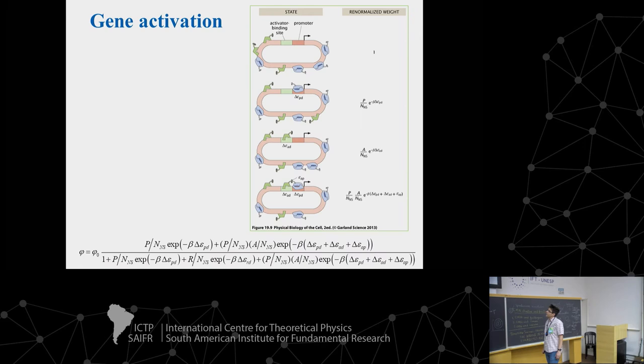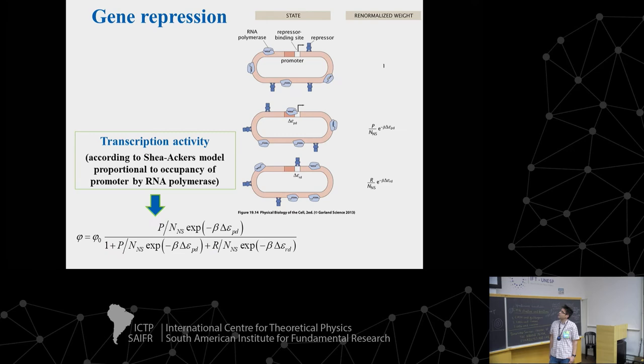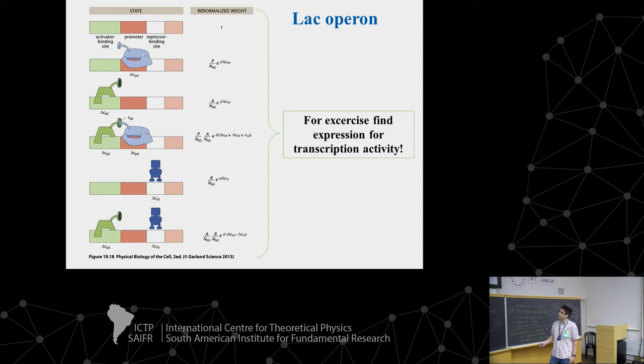Now, how do you write the statistical weights? There are two basic cases: activation of transcription and repression of transcription. I will explain activation first, then repression, and then we will go to the more complex case with both — which you will finish as a problem.